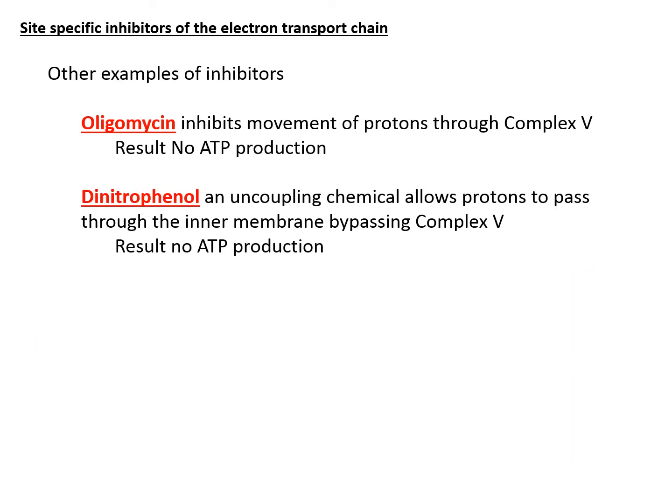There are also other types of inhibitors that can block complex 5, or ATP synthase, such as oligomycin and dinitrophenol. As a result, you will get zero ATP production.